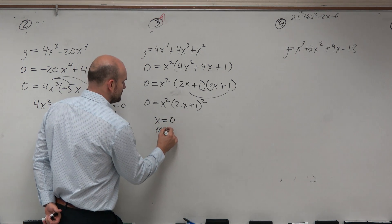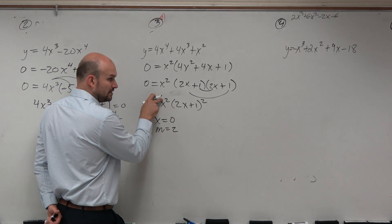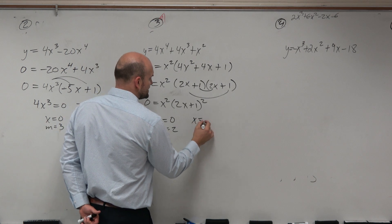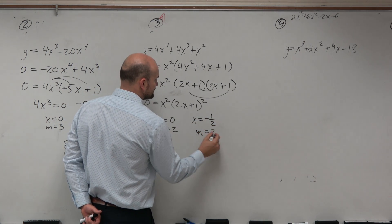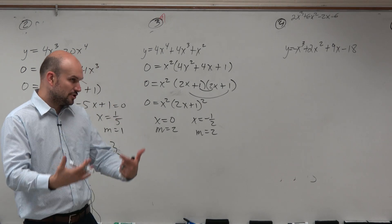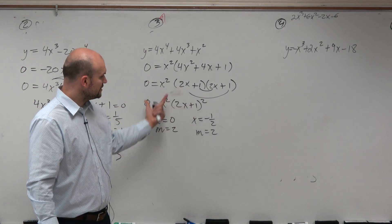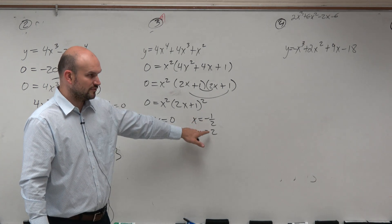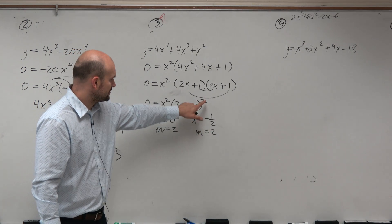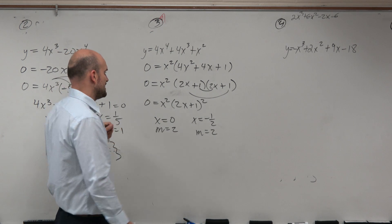So I'm going to have x equal to 0 with a multiplicity of 2, because that's the power of that zero. And x is equal to negative 1/2 with a multiplicity equal to 2. So again, I'm applying the zero product property. I'm just not showing my work. Set each factor equal to 0 and solve. You would get 0 and negative 1/2. And then the 2, the multiplicity, comes from the power of each factor.